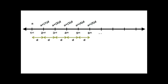Suppose I want the 28th term — I have to add 27 times D to the first term A. So in general, if I want the nth term, I have to add (n − 1) times D to the first number A.